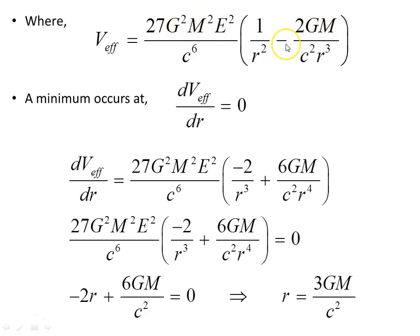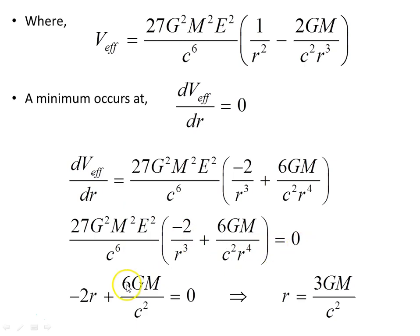The effective potential is the expression shown here. We can locate where circular orbits occur by finding where dV_eff/dR = 0, corresponding to a minimum or maximum of the effective potential. Taking the derivative and setting it equal to zero, solving through these steps gives a turning point at R = 3GM/c² — the single orbit we found earlier.